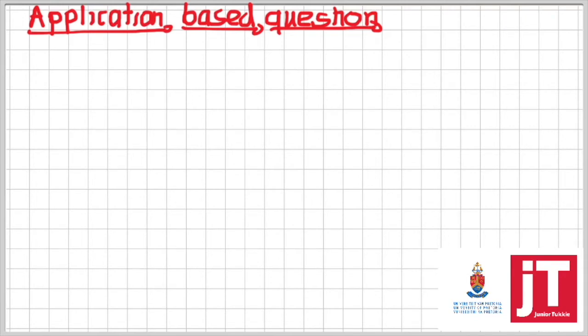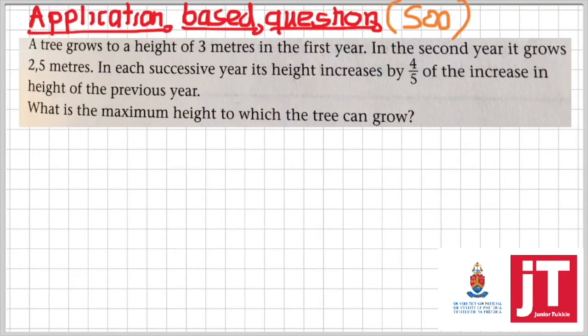The one that I've chosen is as follows. A tree grows to a height of 3 meters in the first year. In the second year, it grows 2.5 meters. In each successive year, its height increases by 4 over 5 of the increase in height of the previous year. What is the maximum height to which the tree can grow?